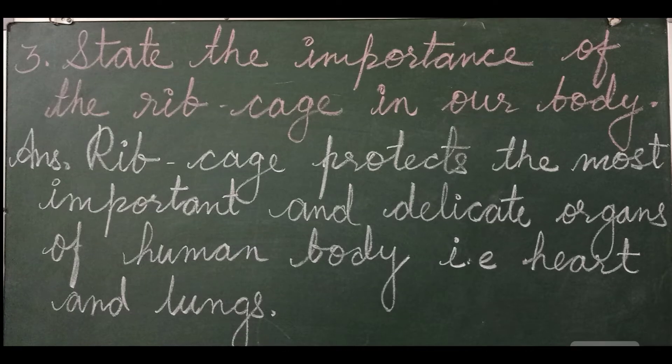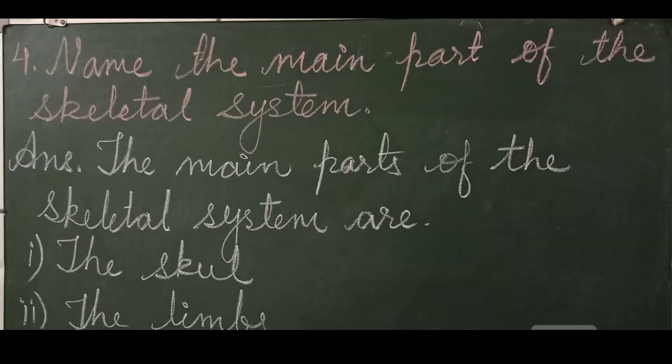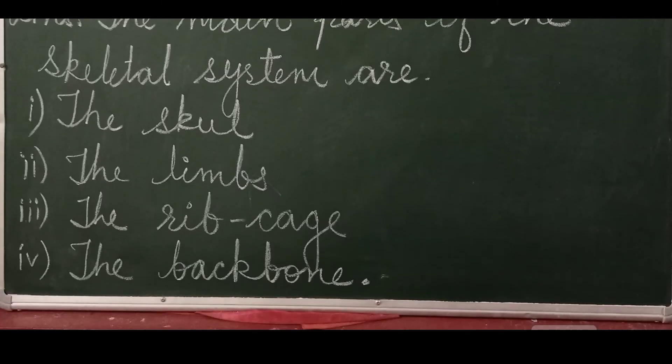Question 4: Name the main parts of the skeletal system. Answer: The main parts of the skeletal system are the skull, the limbs, the rib cage, and the backbone.